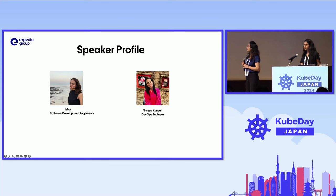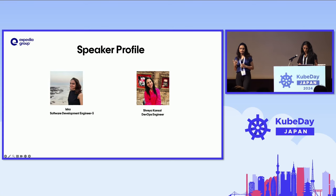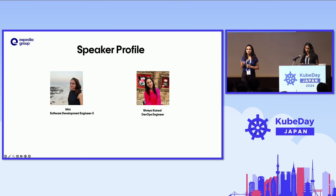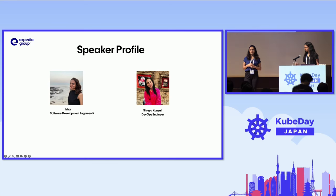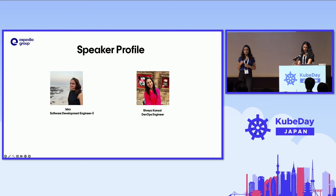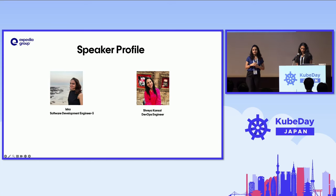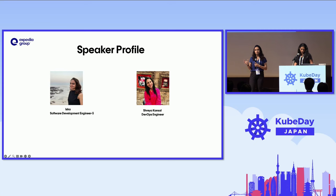Before we move to the technical aspects of this presentation, let me share a bit more about ourselves. My name is Isha. I'm a software development engineer at Expedia Group. I have been working at Expedia Group for more than three years now, with a total of around eight-plus years of experience in this industry, working on Kubernetes, cloud, and these technologies. With Expedia, I'm mainly employed as a platform engineer where my focus is basically on application development, deployment, supporting that, and scaling capabilities.